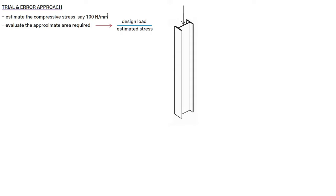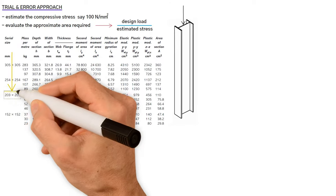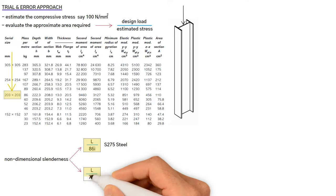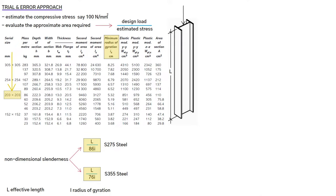Then, we need to select a suitable universal column section size from the table, and evaluate the non-dimensional slenderness using these equations. L is the effective length, and I is the radius of gyration.